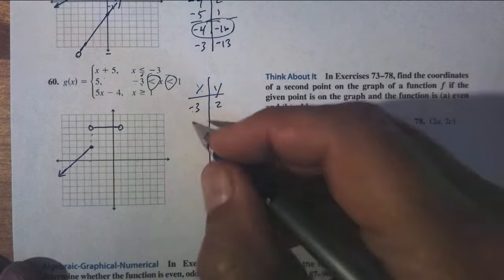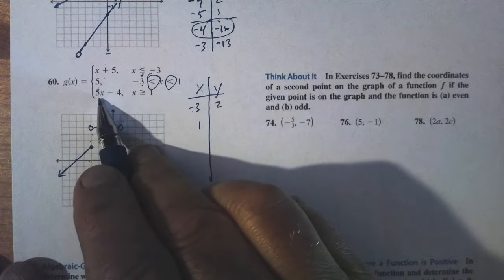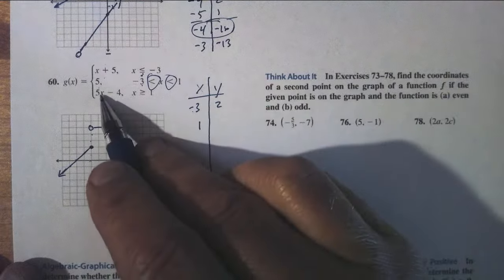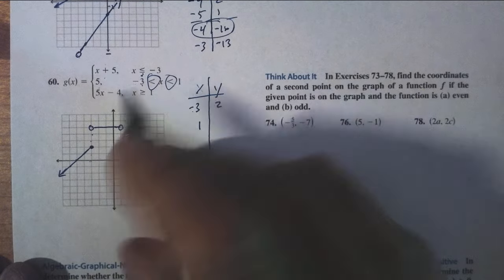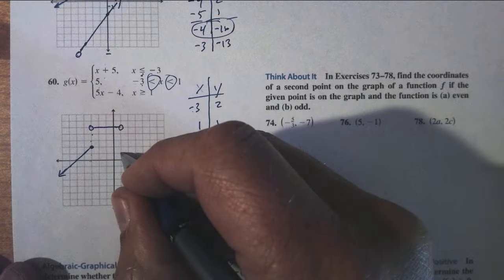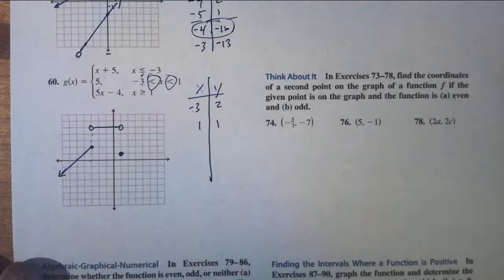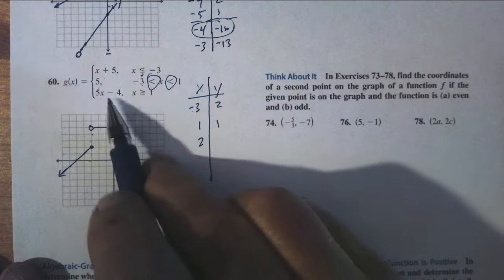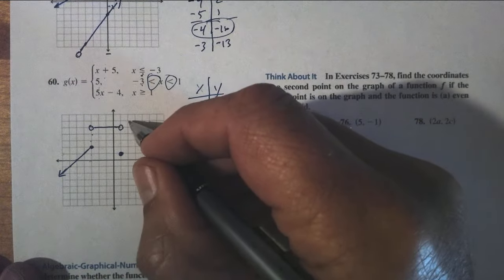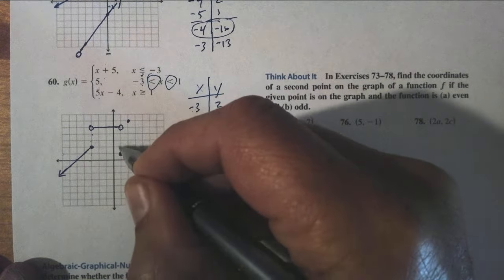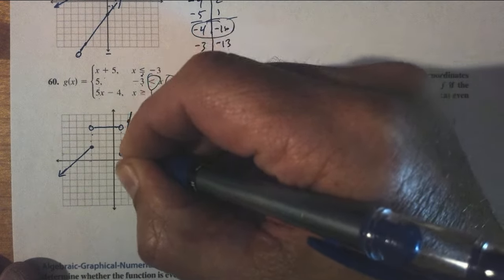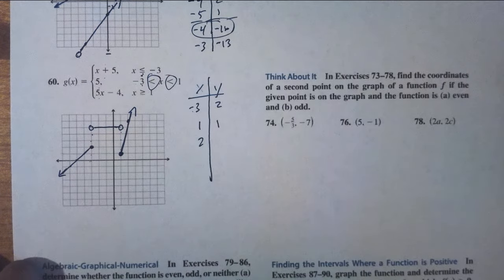Then at x equals 1, the graph uses the third piece. I put in 1 and get 5 minus 4 equals 1, so the point (1, 1) truly exists. This piece has slope 5. Putting in 2 gives 10 minus 4 equals 6, which is up 5 over 1, confirming slope 5. The graph looks like a line going up steeply from there, and that's all we do on this problem.